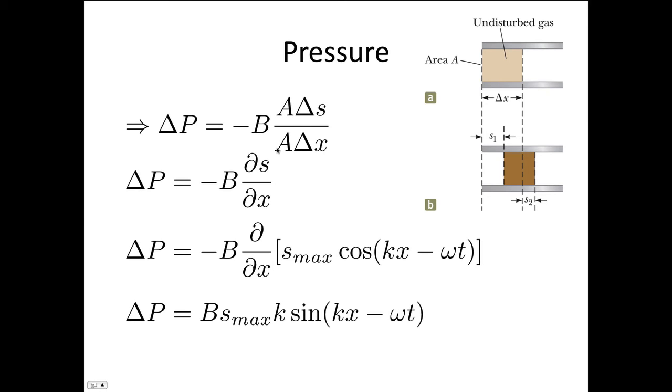And taking the partial derivative, replacing this capital delta with a little delta to indicate that we're taking just a very small increment, we can write this as minus B dS dx.